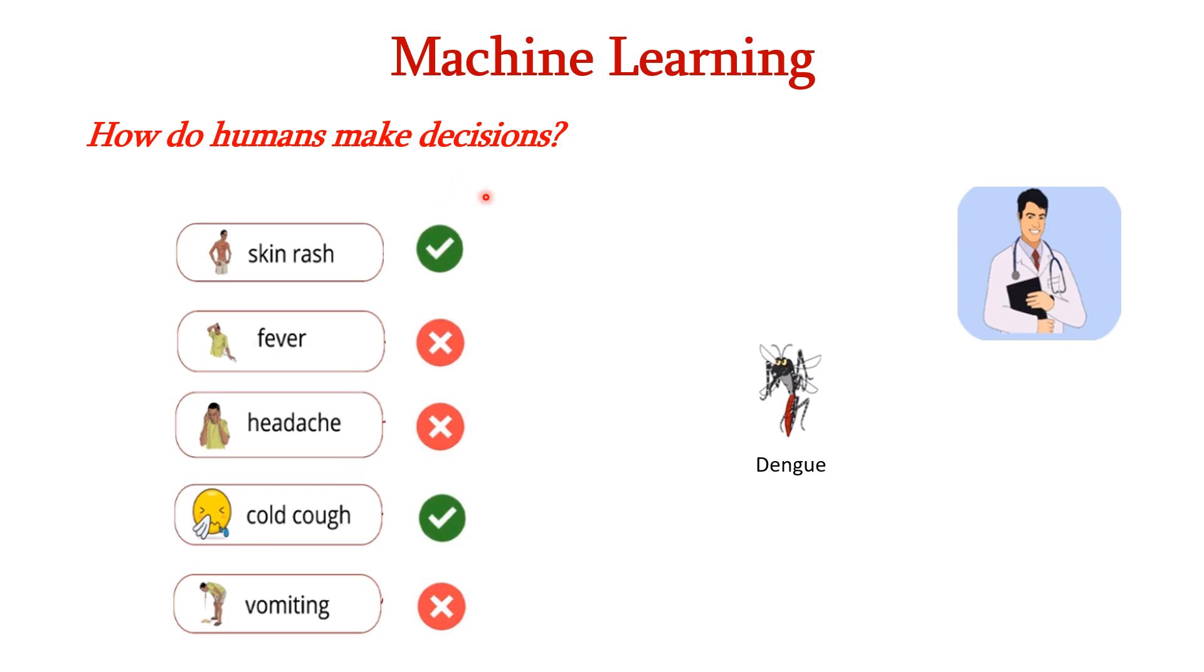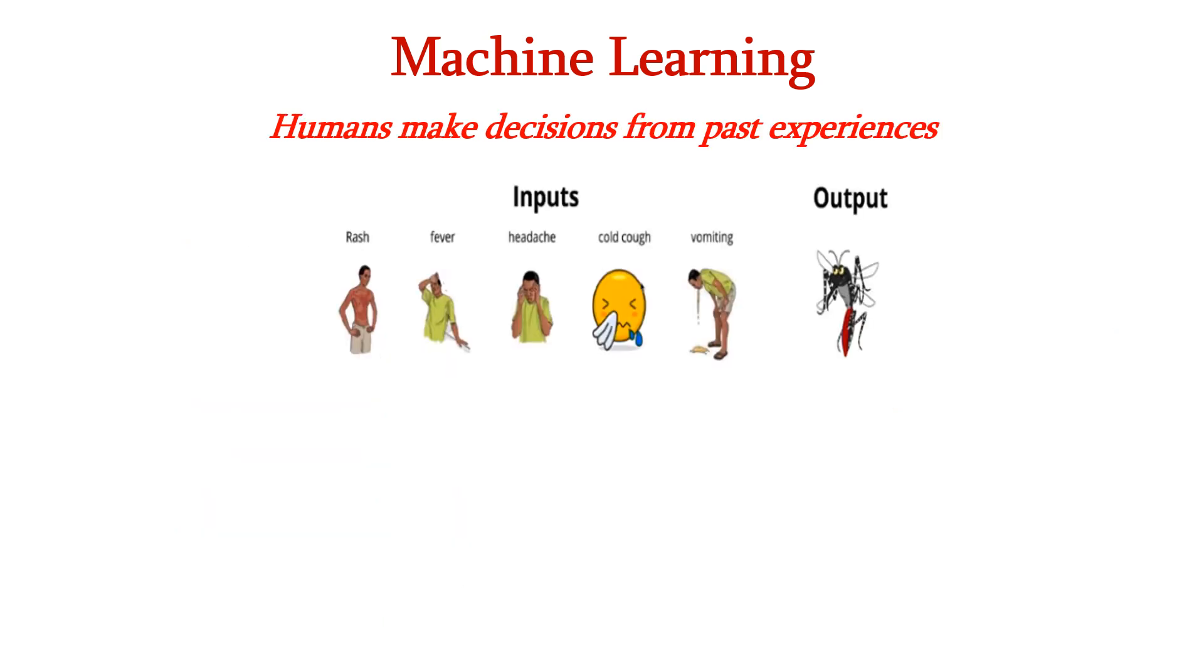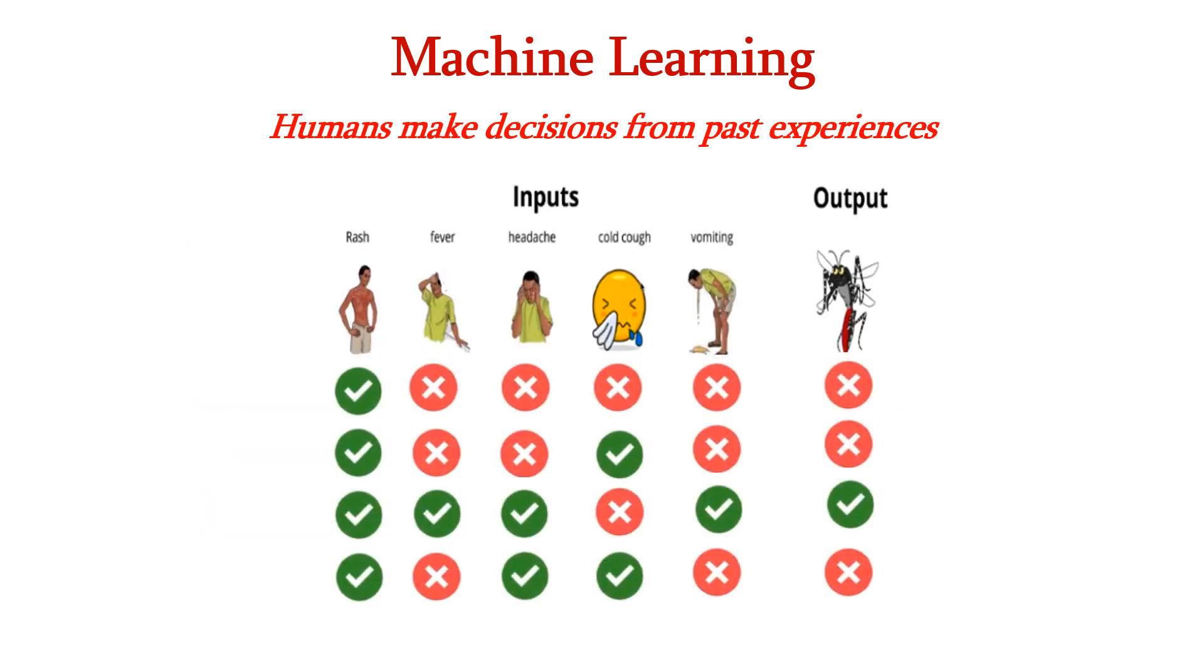If only some of these symptoms are available for a patient, the doctor decides that the patient is not having Dengue fever. But if majority of these symptoms are available, the doctor decides that the patient might have Dengue fever. How does the doctor make these decisions? The doctor would have treated many patients in his past experience. So based on his experience, he analyzes the symptoms and then decides whether the patient is having fever or not. Thus human beings make decisions based on their past experiences.